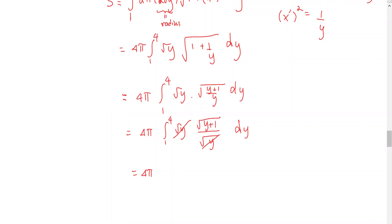We can see the square root y and square root y reduce. Now it becomes 4 times pi integral from 1 to 4 of square root of y plus 1, with respect to y.